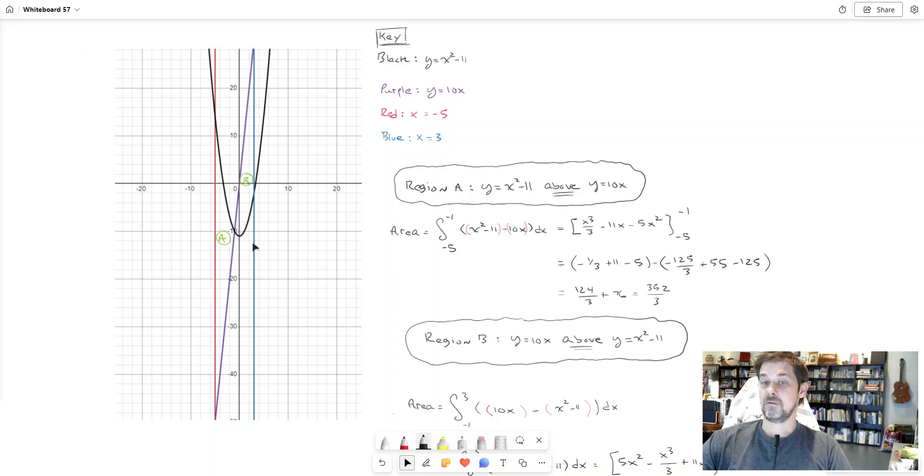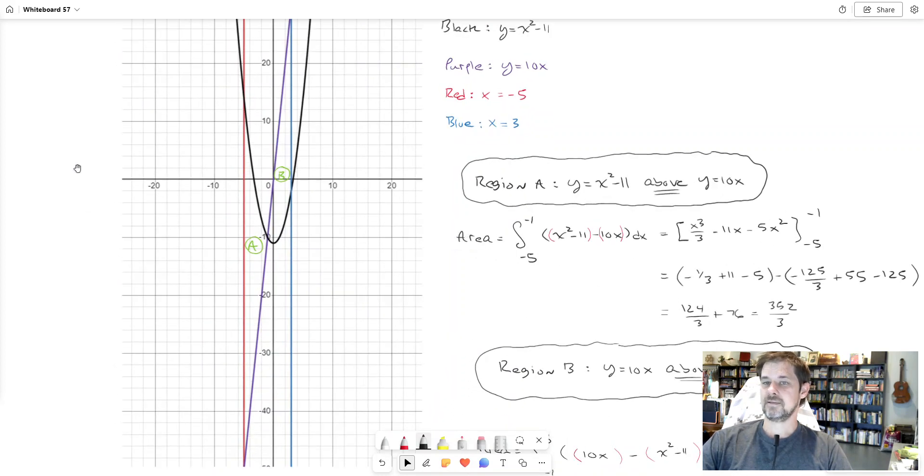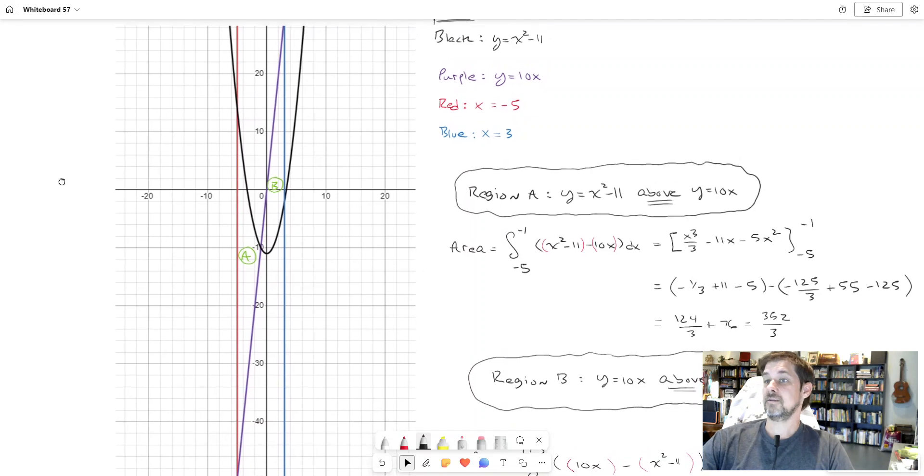Here I have all of those curves and I have a key about the colors. In red is x equals negative 5, that's a vertical line. In blue is x equals 3, that's this blue line. In purple is the line y equals 10x which you see there, and in black is the parabola y equals x squared minus 11.